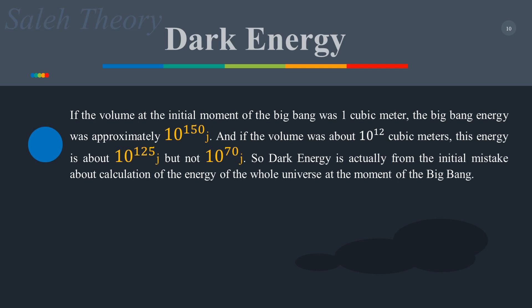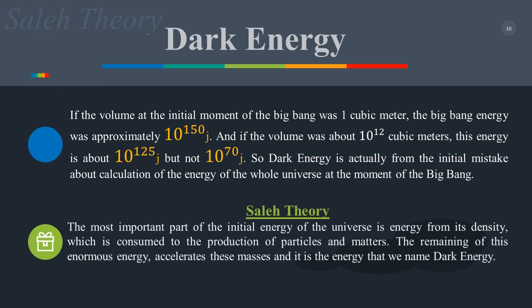At the moment of the Big Bang, Salih theory believes that the most important part of the initial energy of the universe is the energy from its density, which is consumed in the production of particles and matter. The remaining portion of this enormous energy accelerates these masses, and it is this energy that we name dark energy.